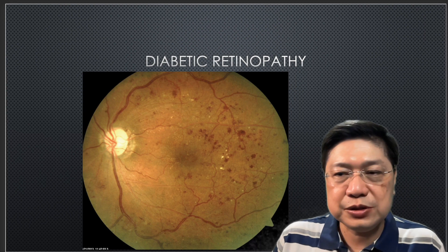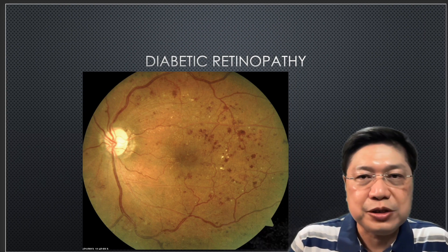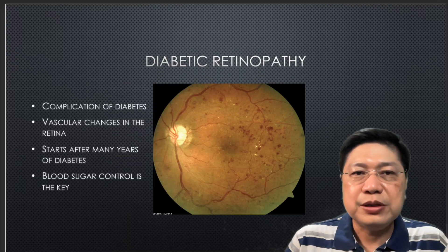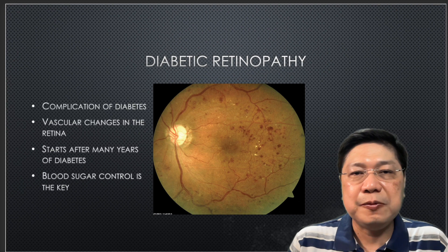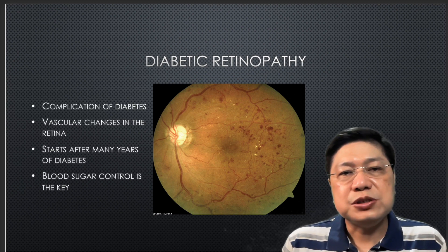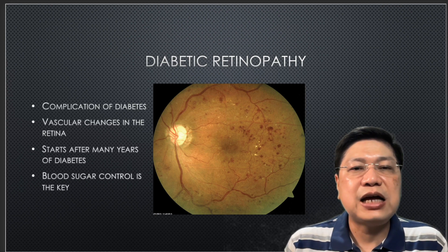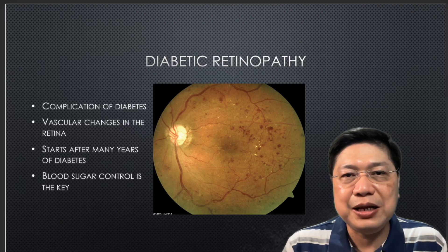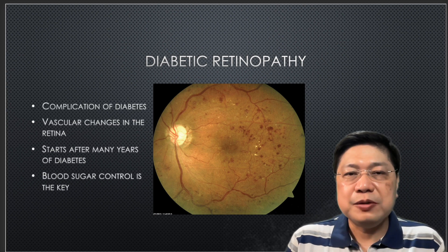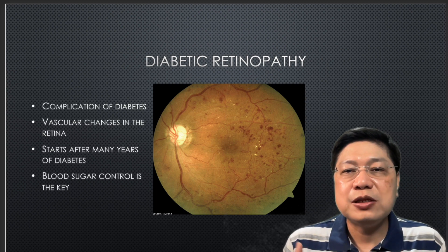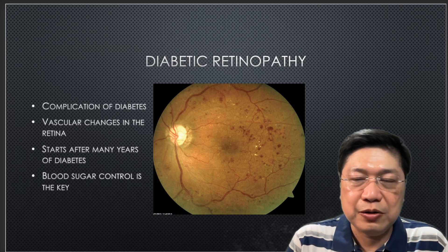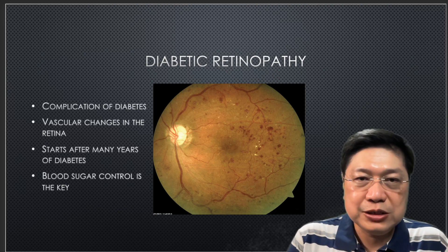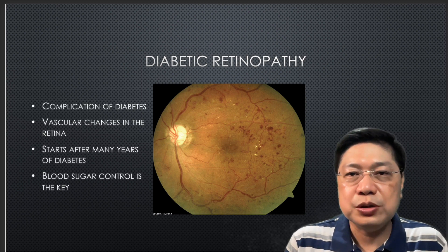Now let's go to common pathologies we encounter in the retina. The thing that comes to mind whenever you say retinal pathology is diabetic retinopathy. Diabetic retinopathy is basically a complication of diabetes — vascular changes in the retina — and it starts after many years of diabetes. The key is that blood sugar control will help you in managing diabetic retinopathy. But you may reach a point where even if you control blood sugar, your diabetic retinopathy has advanced so much that it will still get worse. In the early stages, however, controlling your blood sugar would allow you to control your diabetic retinopathy.